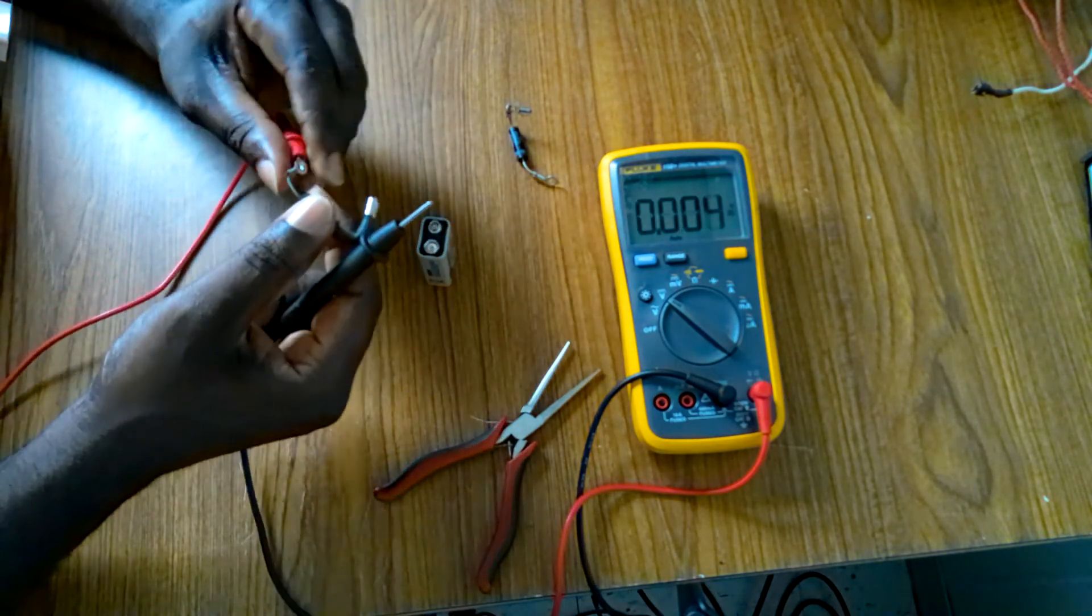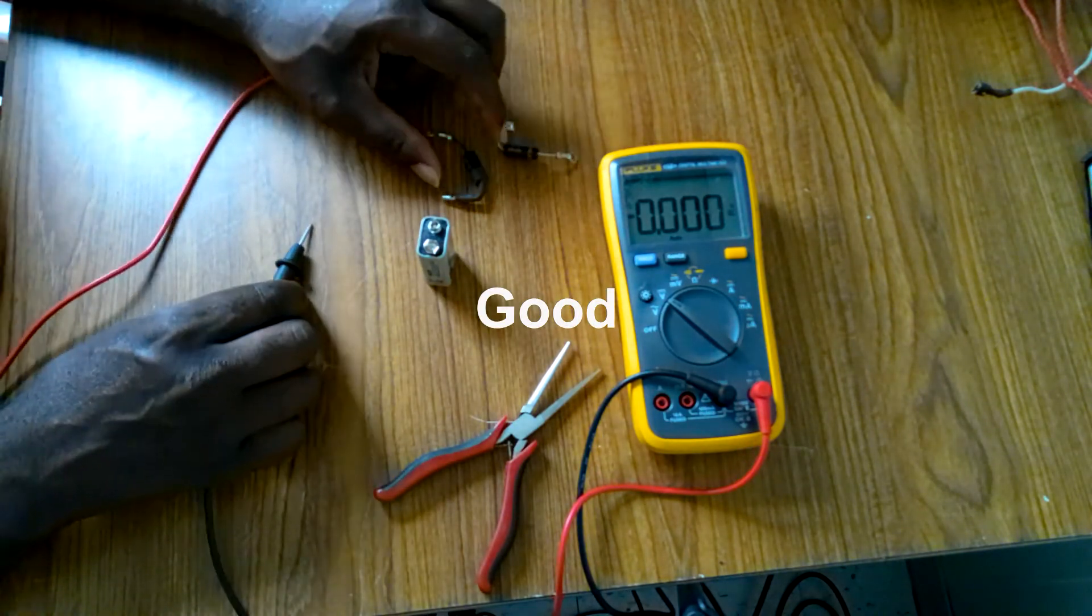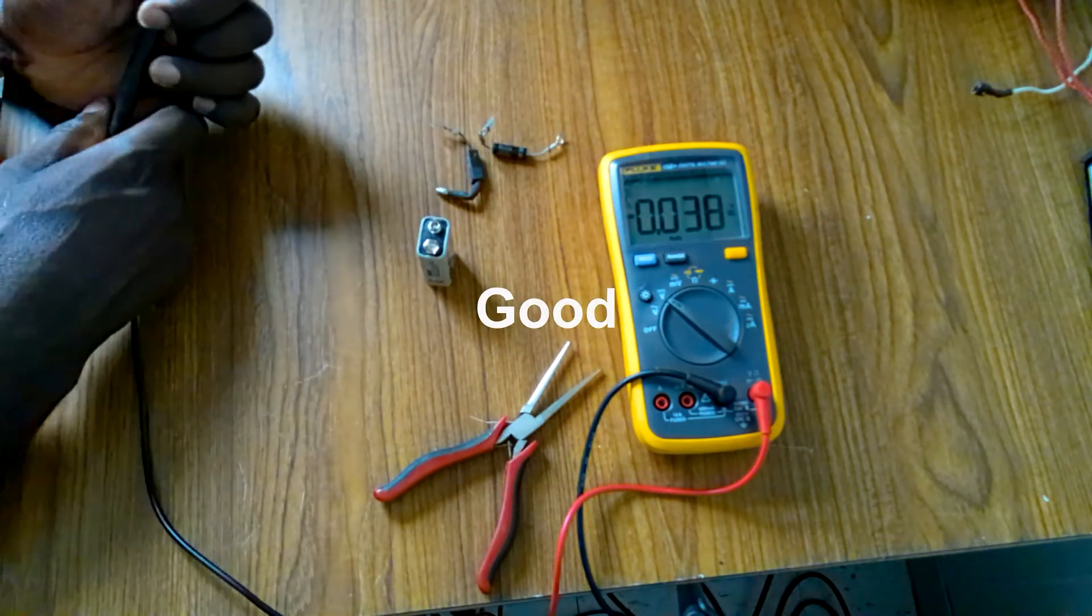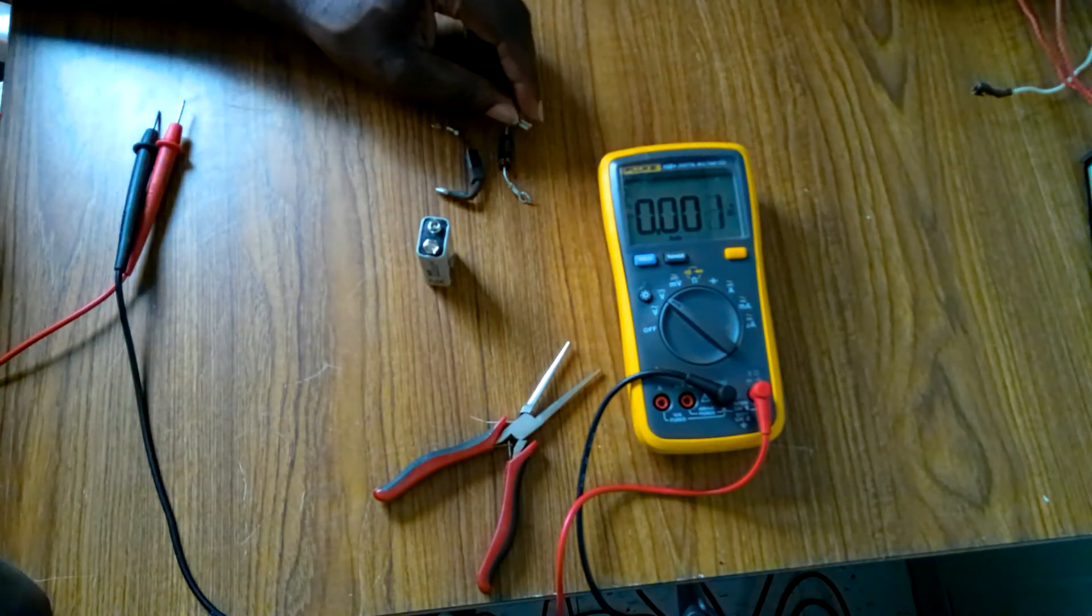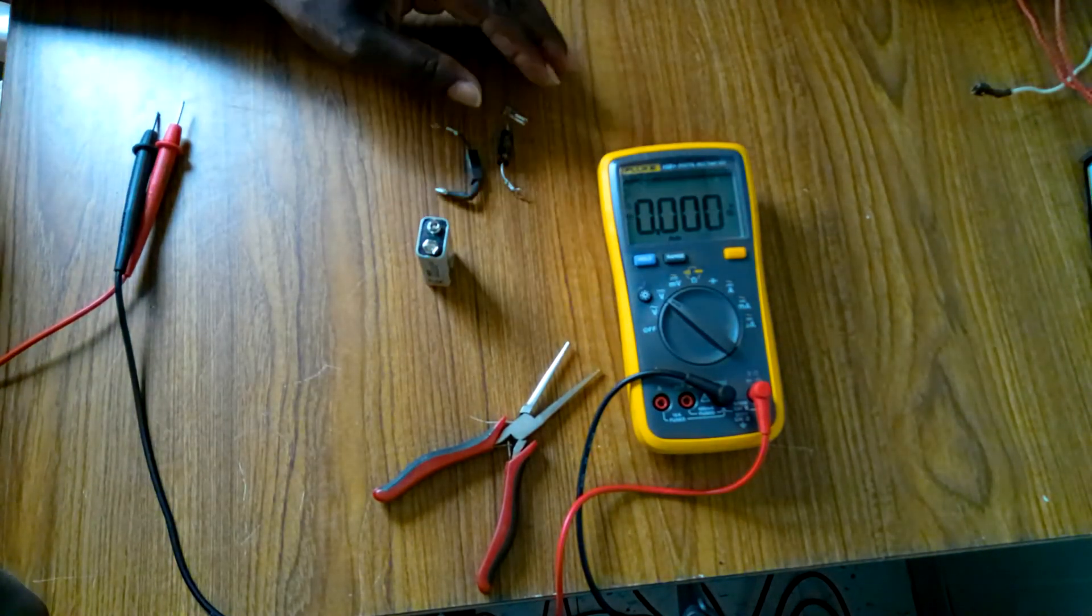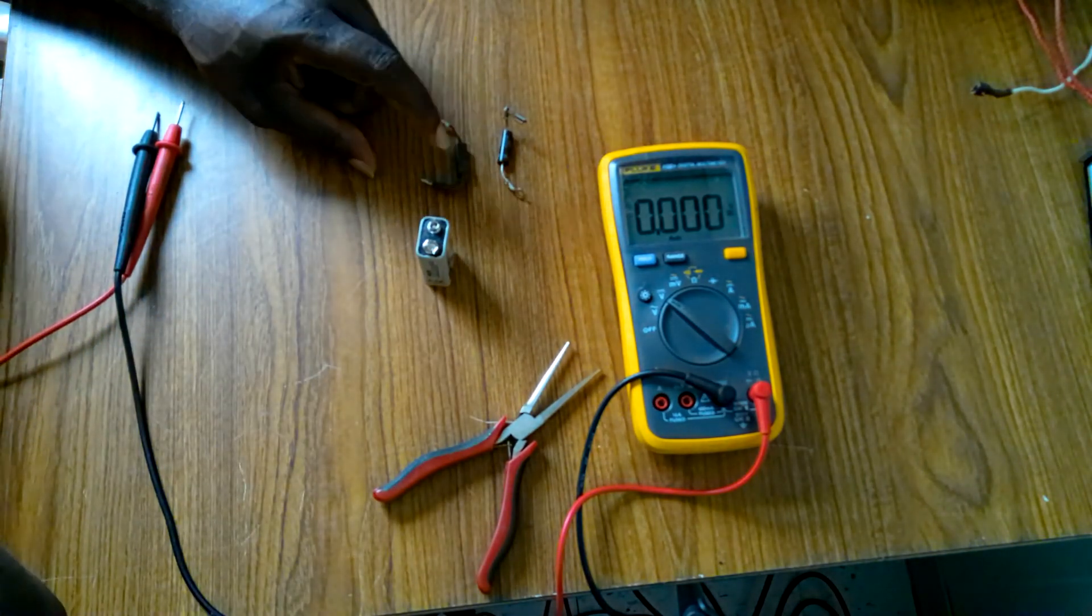So this is a bad microwave diode. Now if you get only zero, then you know that it's bad on both ways. So now we know how to test a microwave diode.